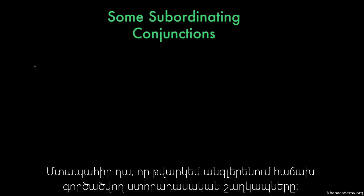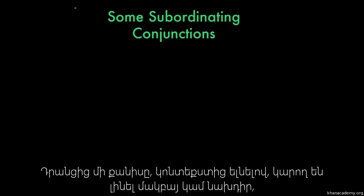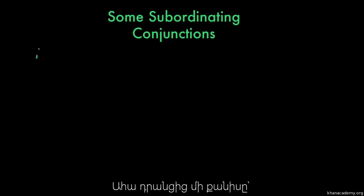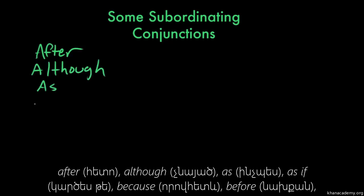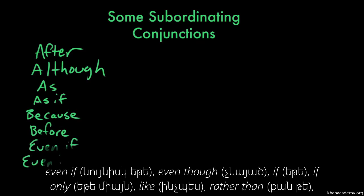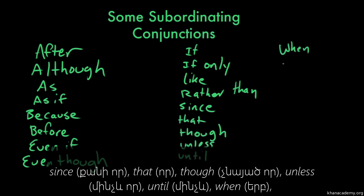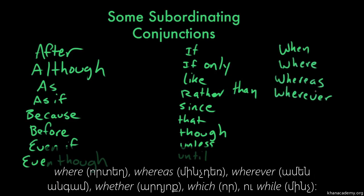Here are some of the most common subordinating conjunctions in English. Some of these you might recognize as being adverbs or prepositions in other contexts, but you can also use them to unite dependent and independent clauses. Here we go: after, although, as, as if, because, before, even if, even though, if, if only, like, rather than, since, that, though, unless, until, when, where, whereas, wherever, whether, which, and while.